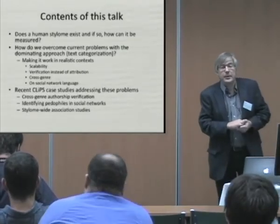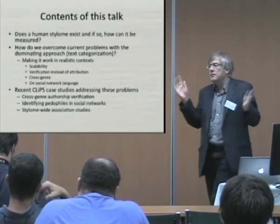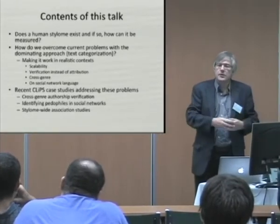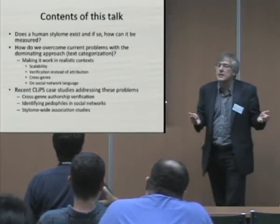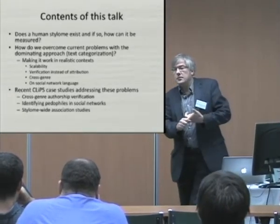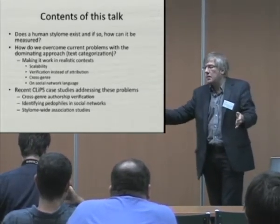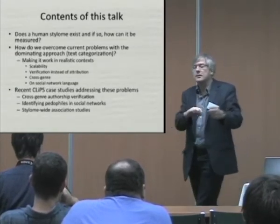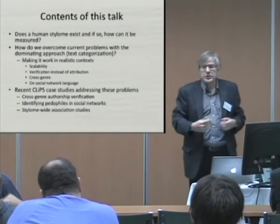Current problems appearing in the literature include the problem of scalability — it's all right for two or three authors, but as soon as you take hundreds or thousands of potential authors, the system breaks down. The same for the length of the document: it's okay if you have the collected works of Shakespeare, but if you only have a tweet of a few lines, it's much more difficult to do authorship attribution. What we want to do is not attribution but verification — we want to know was this text written by this person or not.